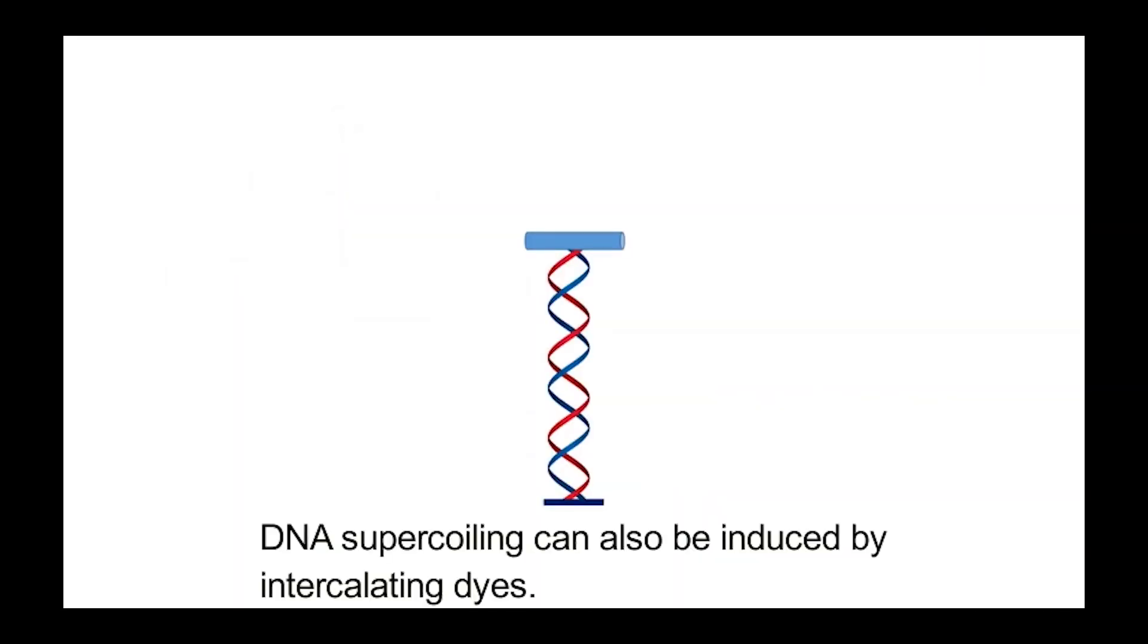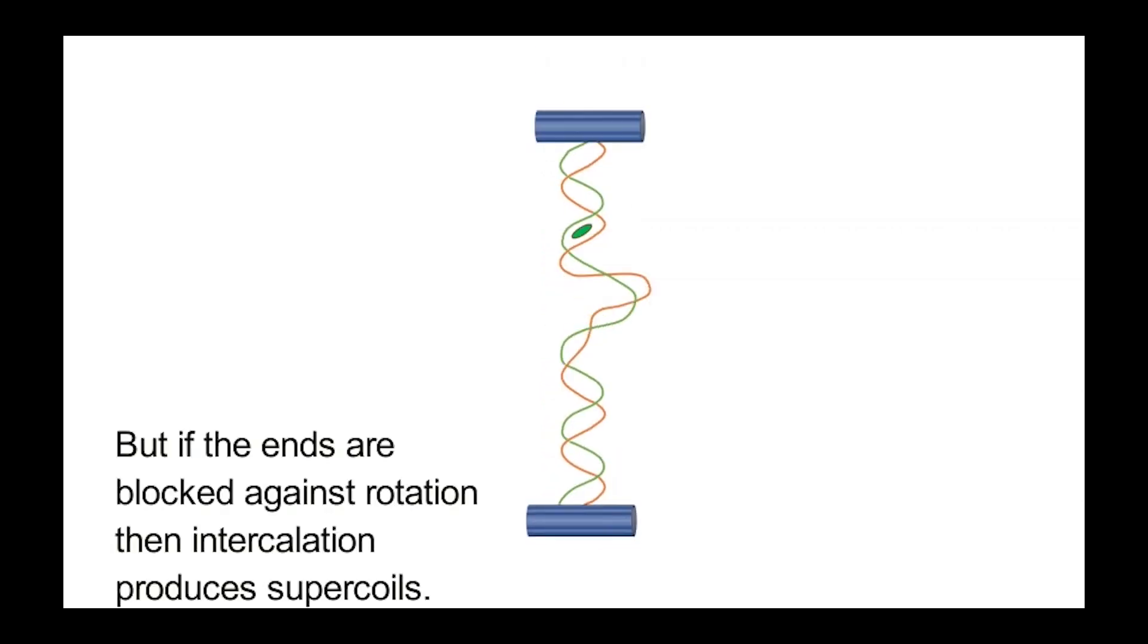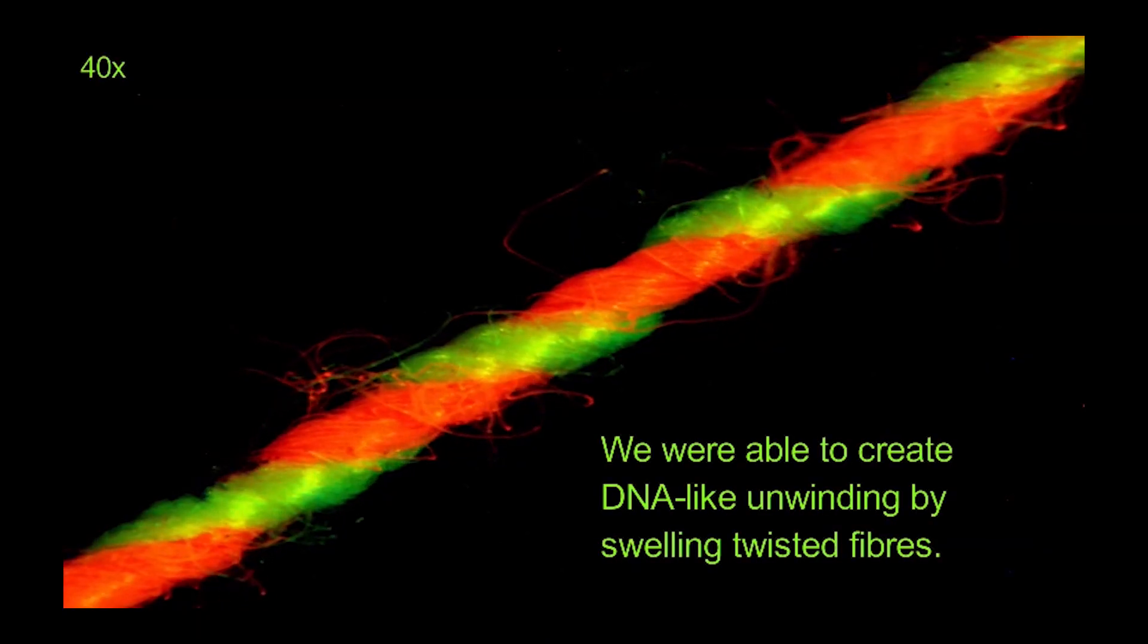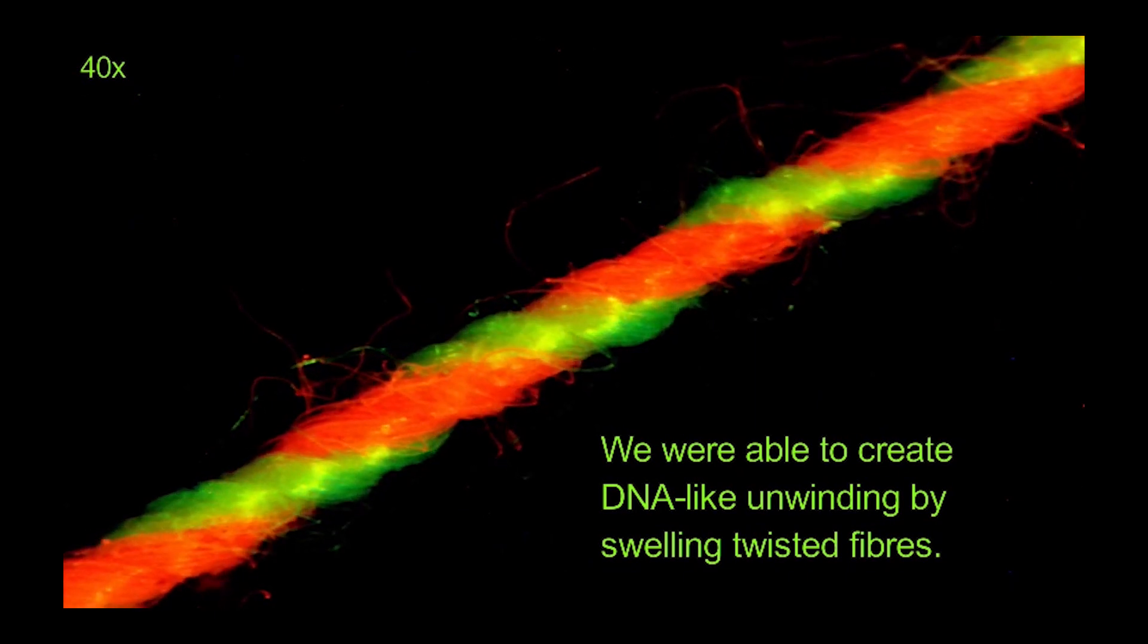DNA supercoiling can also be induced by intercalating dyes. Intercalation causes double-stranded DNA to unwind. But if the ends are blocked against rotation, then intercalation produces supercoil. We were able to create DNA-like unwinding by swelling twisted fibres.